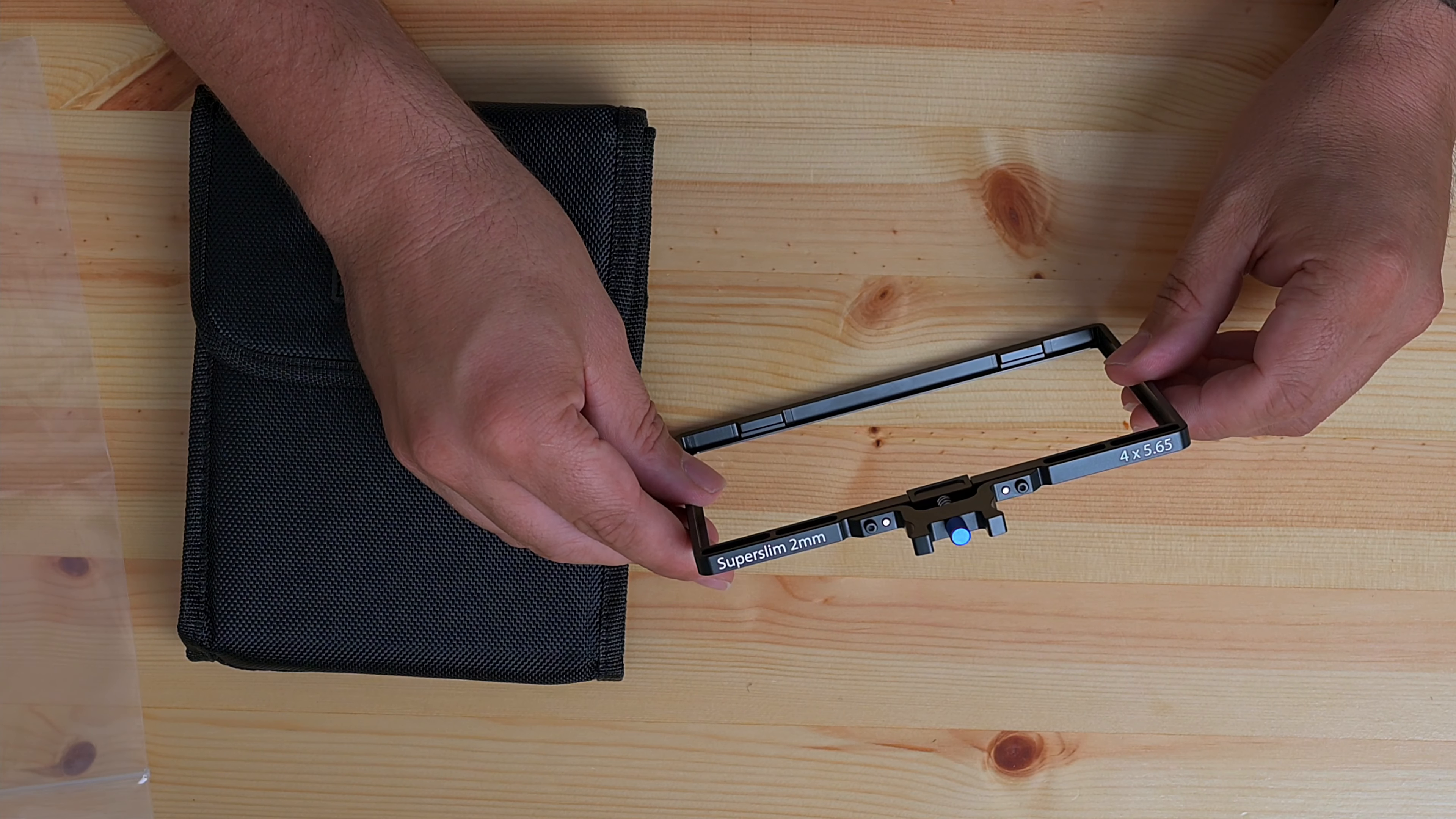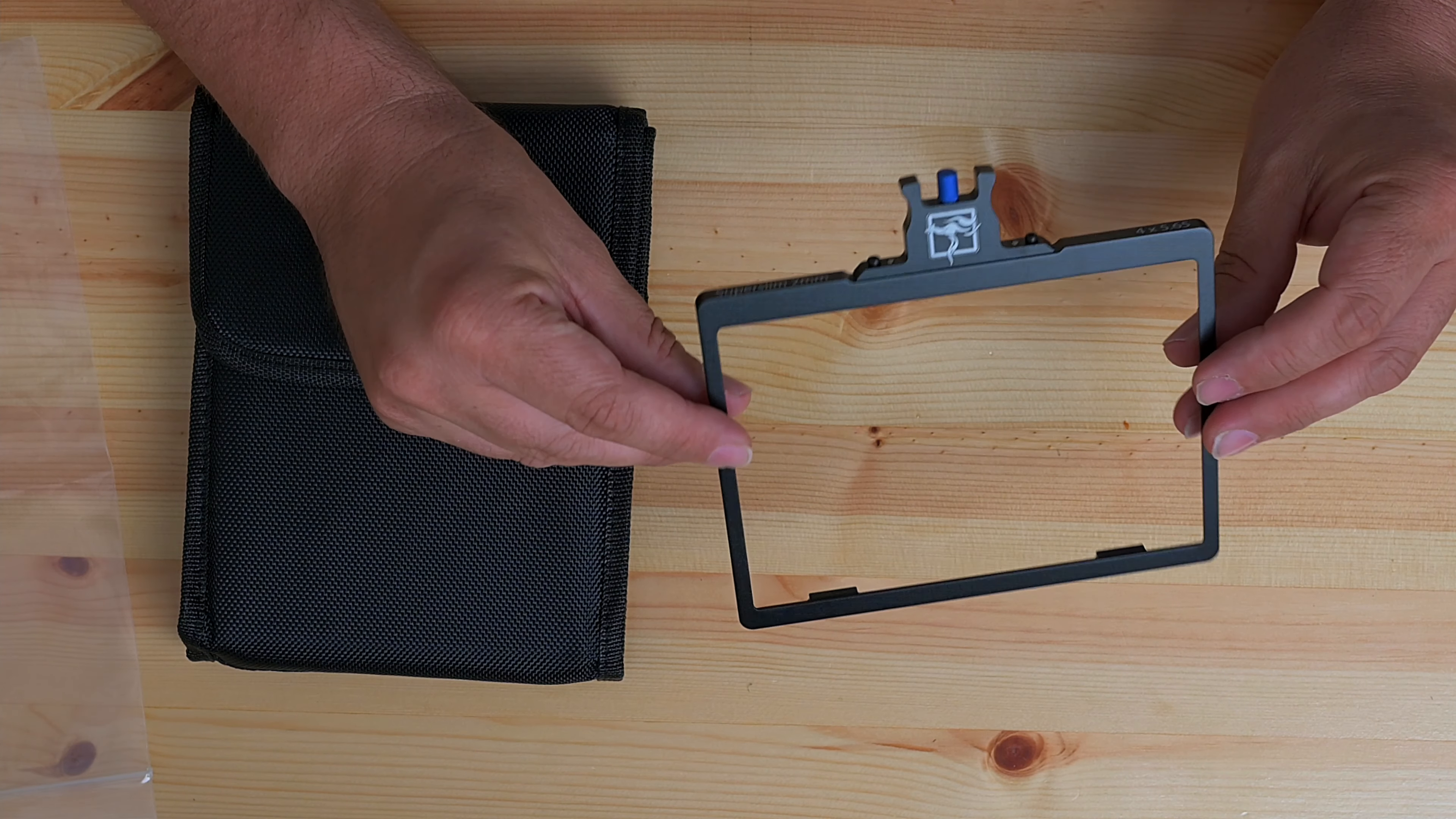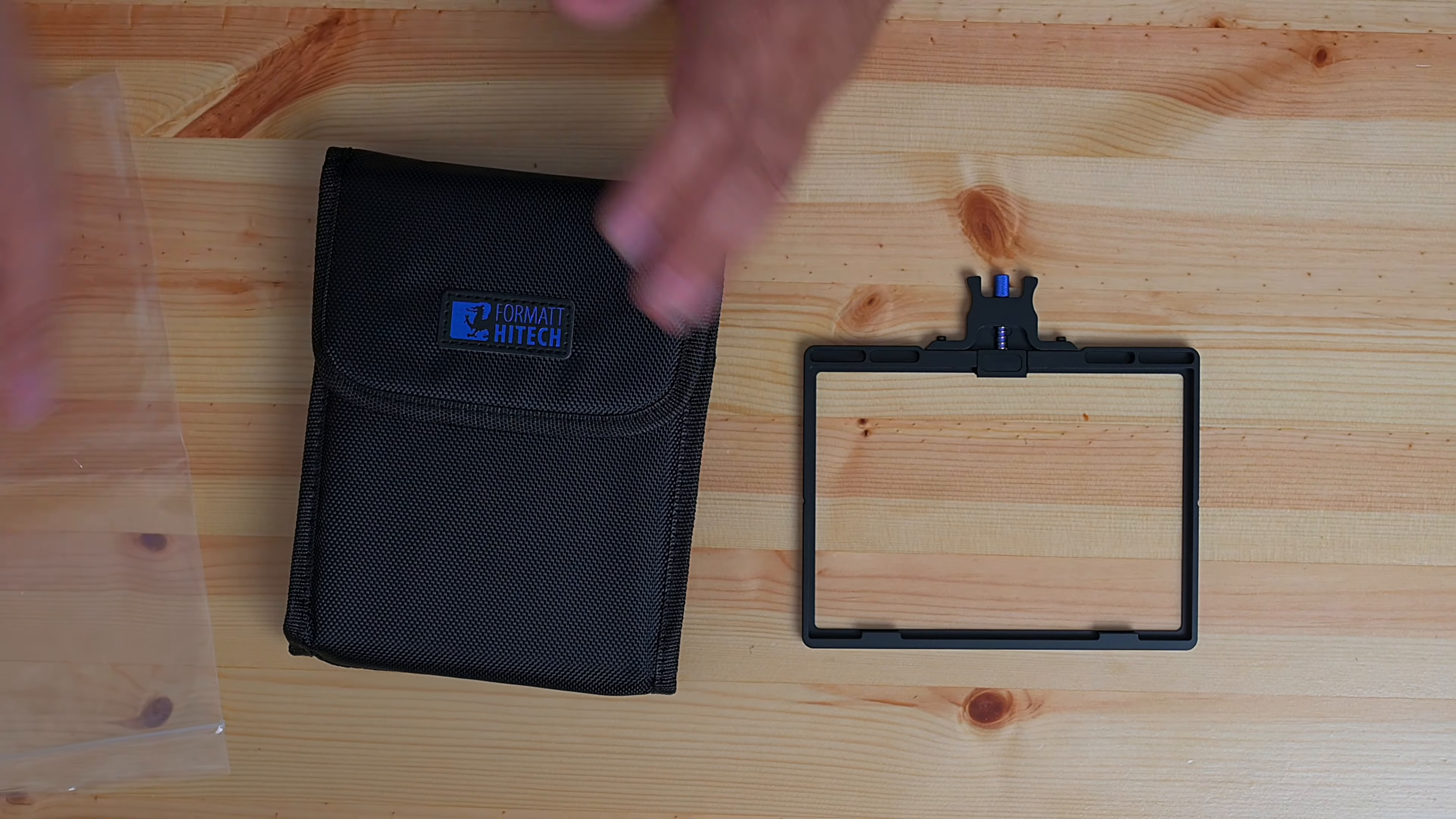As you can see, this is the 2mm to 4mm filter tray adapter. This adapter tray comes with the 3 and the 5 filter kits.